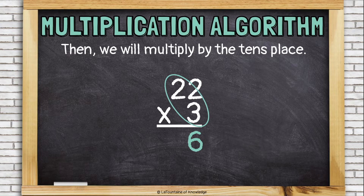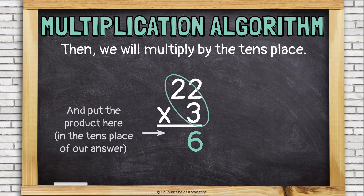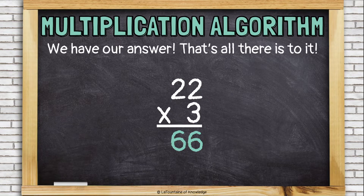Now, we'll multiply the tens place. So we're going to multiply the 3 on the bottom by the 2 in the tens place of the top number. 3 times 2 is 6. And this time, we're going to put that number down here in the tens place of our answer. And that's it. We have our answer. 22 times 3 is 66.